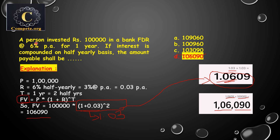To recap: someone invested 1 lakh in a fixed deposit at 6 percent interest for one year, but interest is compounded on a half-yearly basis. So we divide the rate into two: 3 percent per half-year, which is 0.03, and the time becomes 2 half-years.